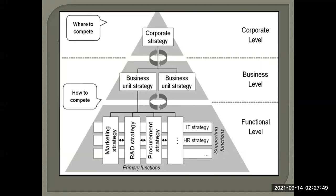At the business level — that is the Strategic Business Unit (SBU) level — a company has a lot of subsidiaries. Take the example of Hindustan Unilever. Hindustan Unilever has subsidiaries like soap manufacturing units, toothpaste manufacturing units, personal care manufacturing units, beauty cream manufacturing units, and food manufacturing units. These are different strategic business units, and to get good synergy, coordination, and resource allocation among them, a separate strategy has to be decided.